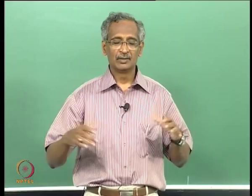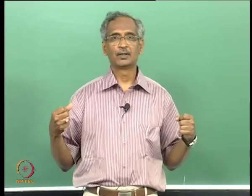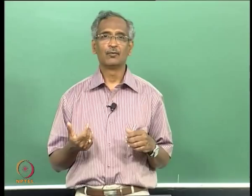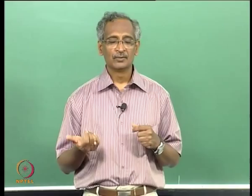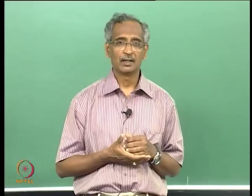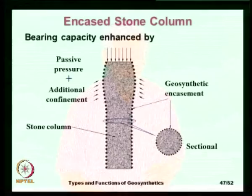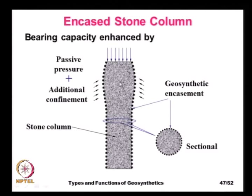When soft clay is present all around the stone column, it can contaminate the aggregate, clogging all openings. Once the aggregate materials are contaminated, their lubricated surfaces result in a loss of shear strength. These problems can be overcome by encasing the stone column in a geosynthetic — either a geotextile or a geocomposite — providing additional confinement, preventing contamination, and making it easier to form the column.